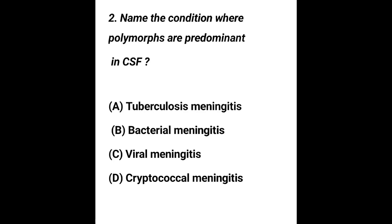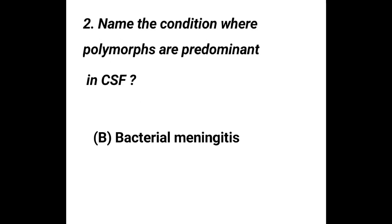Question number 2. Name the condition where polymorphs are predominant in CSF: Option A - Tubercular meningitis, Option B - Bacterial meningitis, Option C - Viral meningitis, Option D - Cryptococcal meningitis. The correct answer is Option B, Bacterial meningitis. In bacterial meningitis, there will be more polymorphs in CSF.